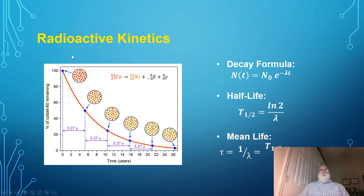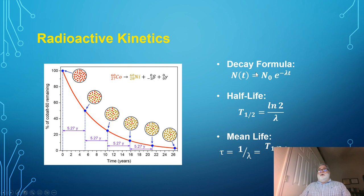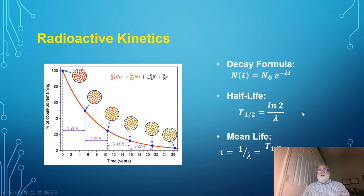Last time we talked about the kinetics — the rate of decay for nuclear decay. The number of decays per unit time is proportional to the number of atoms present, which leads to: N(t) = N₀ · e^(−λt). Lambda is the decay parameter, a property of the particular radioactive nuclide. The half-life is related to the decay parameter by T₁/₂ = ln(2)/λ, and the mean life — the average time before decay — is also related to the decay parameter. This is a review slide from last time.